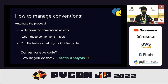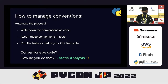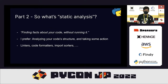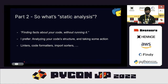So how should we manage conventions? I'm proposing that you can automate the entire process. You write down the conventions as code, you test for these conventions by writing tests, and then you run the tests as part of your CI test suite. But the big question is: how do you express conventions as code? The answer for that is static analysis.